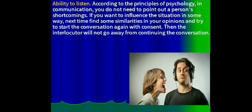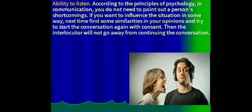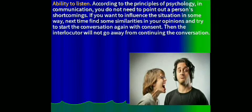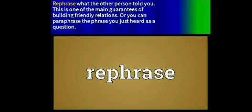The next one is the ability to listen. You should have the ability to listen to the speaker, because when you listen, you show respect to their ideas, sorrows, and problems. Famous orators advise us to be able to listen to the participant of the dialogue — it will affect communication positively. The next one is to rephrase. Rephrase what the other person told you; this is one of the main guarantees of building good relations. You can also paraphrase a phrase as a question back to your listener, which shows that you are giving attention to their words.